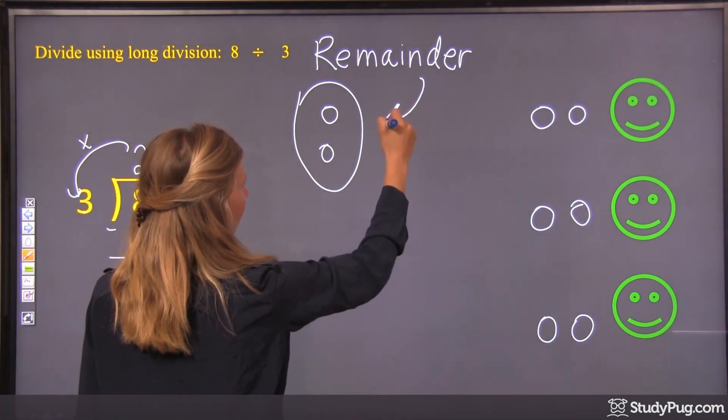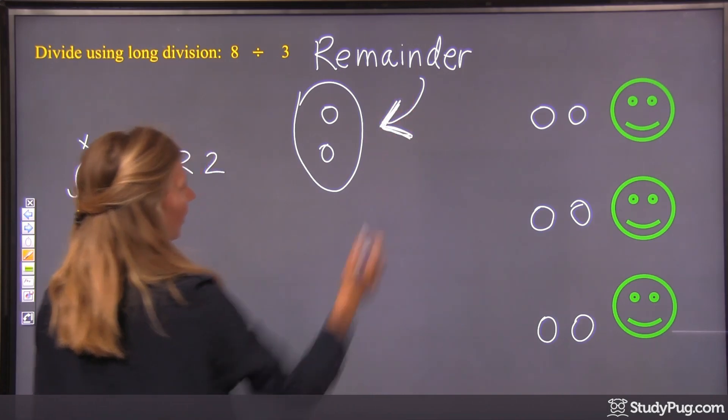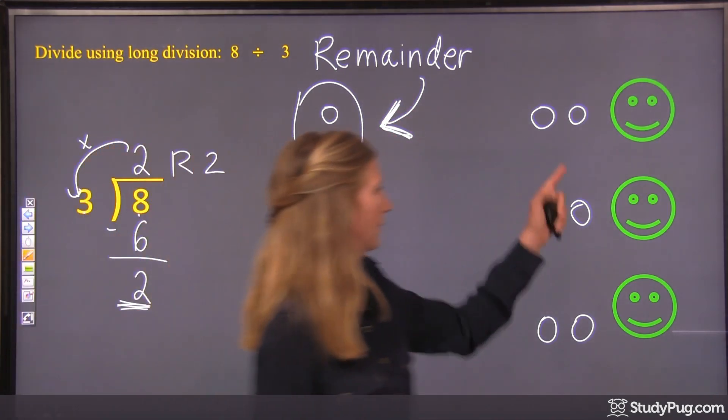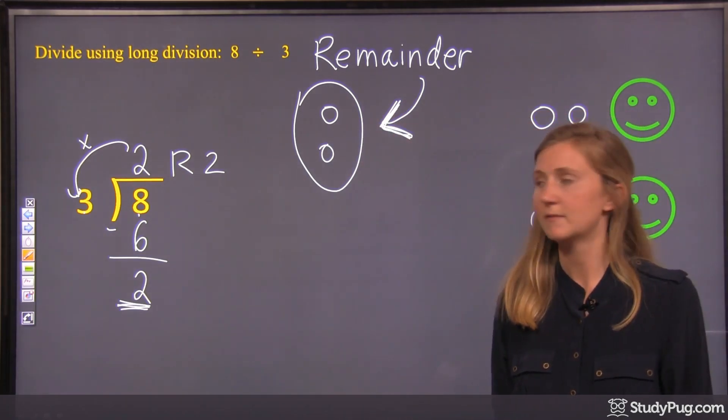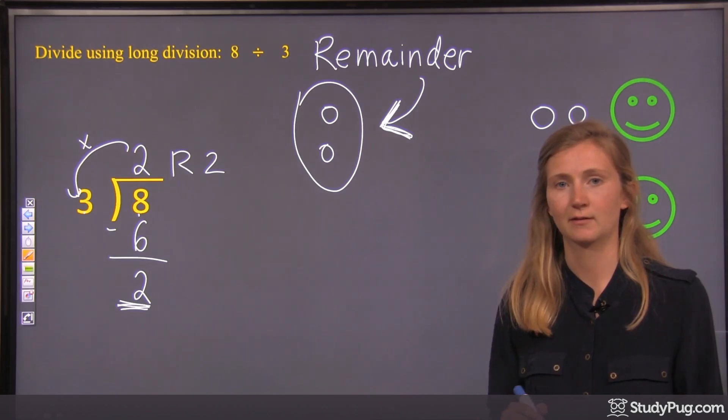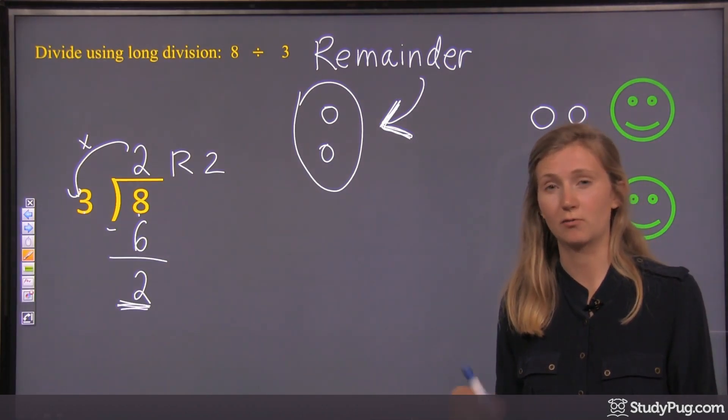Okay? We're splitting our 8 cookies amongst 3 people. Those 3 people get 2 each, and then there's 2 left over. All right? That's what a remainder is. So let's try some more questions on remainders to get you more comfortable with what a remainder is.